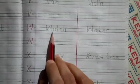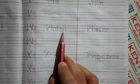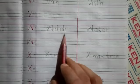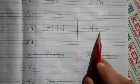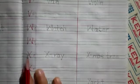W for watch. W A T C H, watch. Watch means ghadi. W A T E R, water. Water means paani.